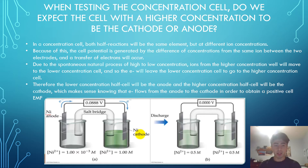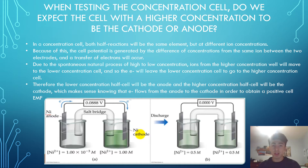Now that we've answered that, the lower concentration cell will be the anode and the higher concentration cell will always be the cathode. This makes sense knowing from our pre-lab reading that electrons will flow from the anode to the cathode in order to maintain a positive cell EMF.